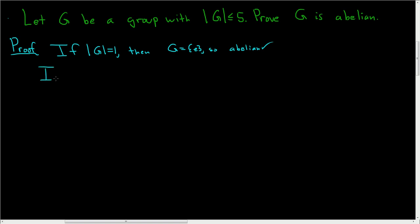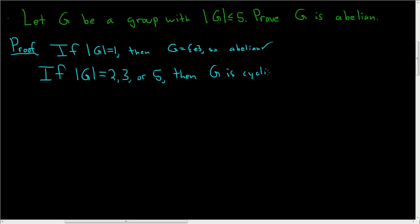Now if the order of G is a prime number less than or equal to 5 — so if it's 2, 3, or 5 — then G is cyclic by a previous argument, and hence abelian.